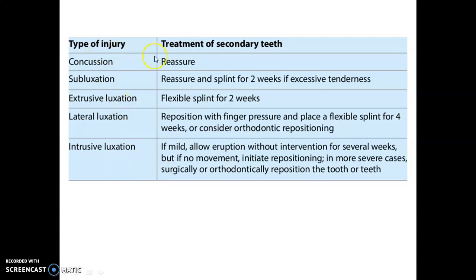For permanent tooth injuries: concussion — reassure the patient; subluxation — reassure and splint for two weeks; extrusive luxation — flexible splint for two weeks; lateral luxation — reposition and place a flexible splint for four weeks or orthodontic repositioning; intrusive luxation — if mild, allow re-eruption without intervention for several weeks; if no movement, initiate repositioning; severe cases require surgical or orthodontic repositioning.